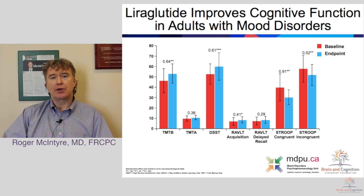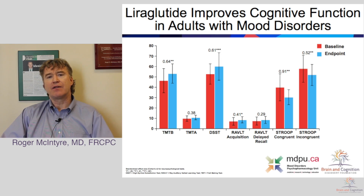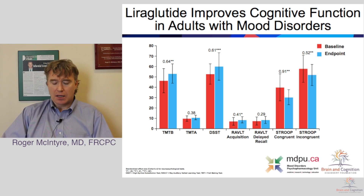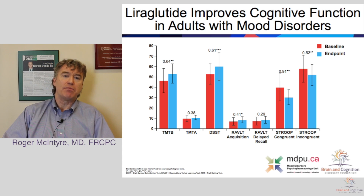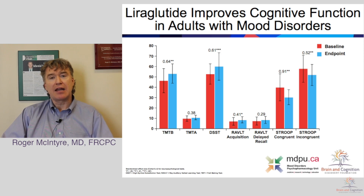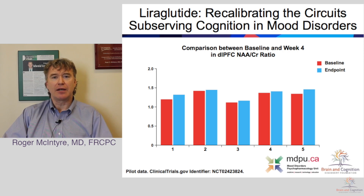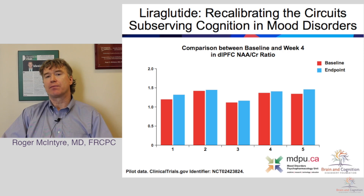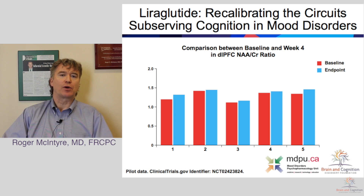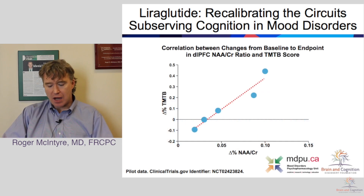Our team has published data showing that liraglutide is not only antidepressant but pro-cognitive, providing evidence that this incretin is brain therapeutic. It has also been shown that incretins can engage the brain as measured using magnetic resonance spectroscopy, specifically looking at N-acetyl aspartate levels, seeing a change in this marker of neuronal viability across four weeks of treatment. Liraglutide not only improves depression and engages cognitive control networks but also improves measures of cognition in people who have depression.